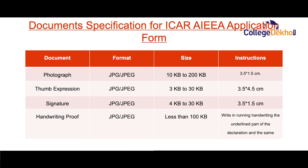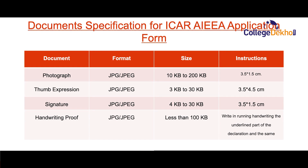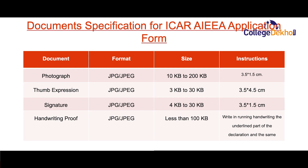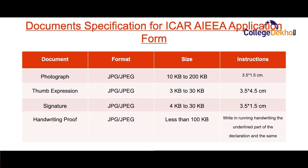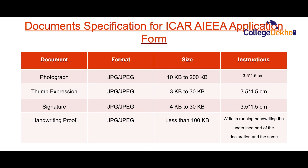You will also have to upload a handwriting proof, for which you must write in running handwriting the underlined part of the declaration, then scan and upload it while filling the application form. The format for the handwriting proof should be JPG or JPEG and the size should be less than 100 KB.